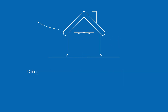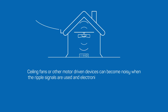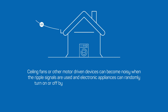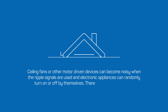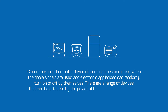Ceiling fans or other motor driven devices can become noisy when the ripple signals are used, and electronic appliances can randomly turn on or off by themselves. There are a range of devices that can be affected by the power utility generated ripple signals.